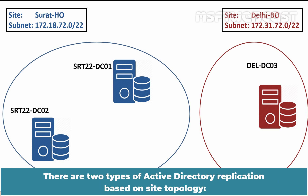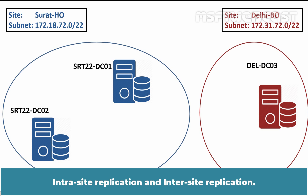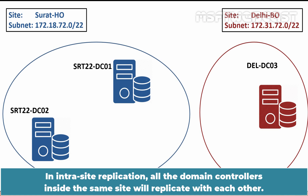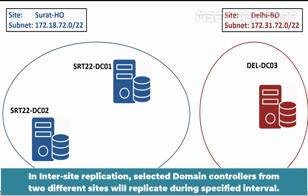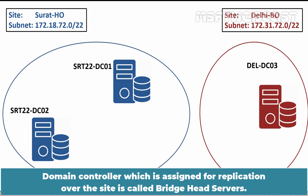There are two types of Active Directory Replication based on Site Topology: Intrasite Replication and Intersite Replication. In Intrasite Replication, all the domain controllers inside the same site will replicate with each other. In Intersite Replication, selected domain controllers from two different sites will replicate during a specified interval. The domain controller assigned for replication across sites is called a Bridgehead Server.